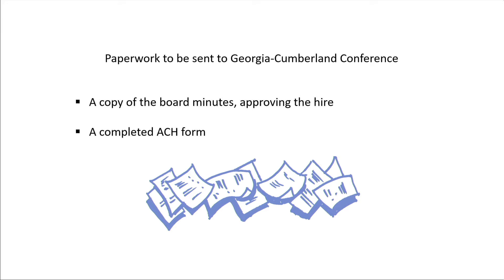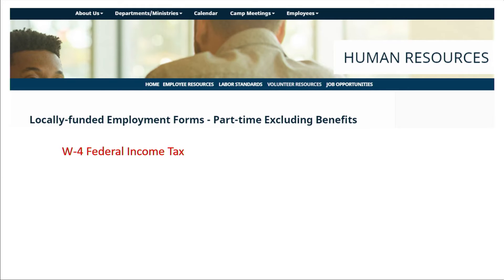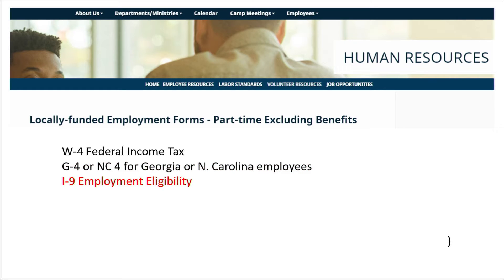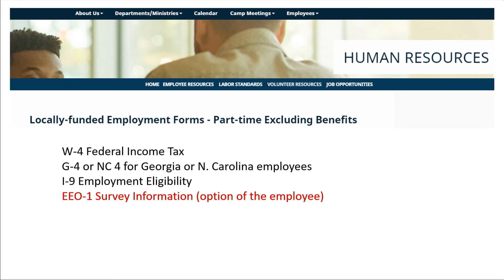These next forms will need to be completed by the new employee by the first day of employment at the latest, but sooner is better. You can print them out, or they can print them out themselves from the website. The W-4 has to do with federal income tax withholding. G-4 or NC-4 has to do with state tax withholding for Georgia or North Carolina employees. I-9 employment eligibility has to do with citizenship and immigration status. EEO-1 survey information — employees can fill it out if they wish.